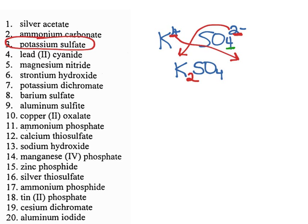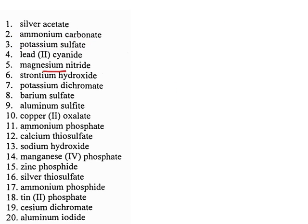My final step is just to make sure I can't simplify anymore. I cannot. There's a two for the K, there's a one for the S, and there's a four for the O. None of that can be simplified. So my final formula is K2SO4. Let's try another one. Let's try strontium hydroxide. Strontium is Sr. It is in group two, so I know that it has a two plus charge. Hydroxide is on the list of polyatomic ions. It is OH with a one minus charge.